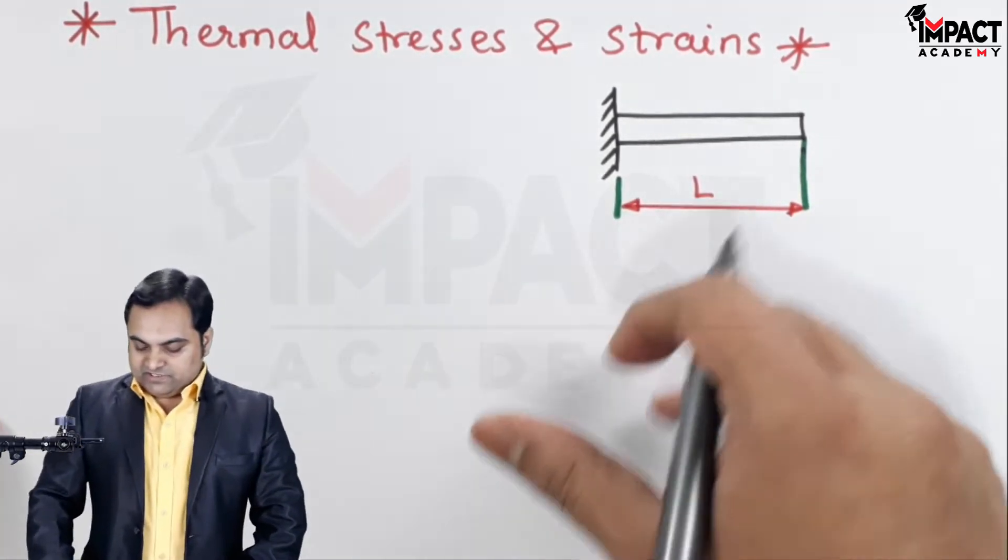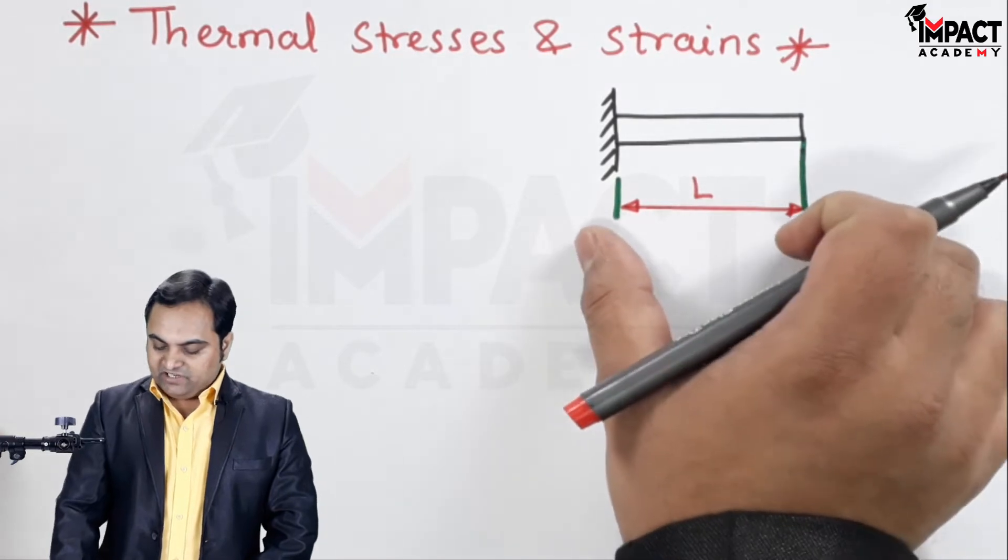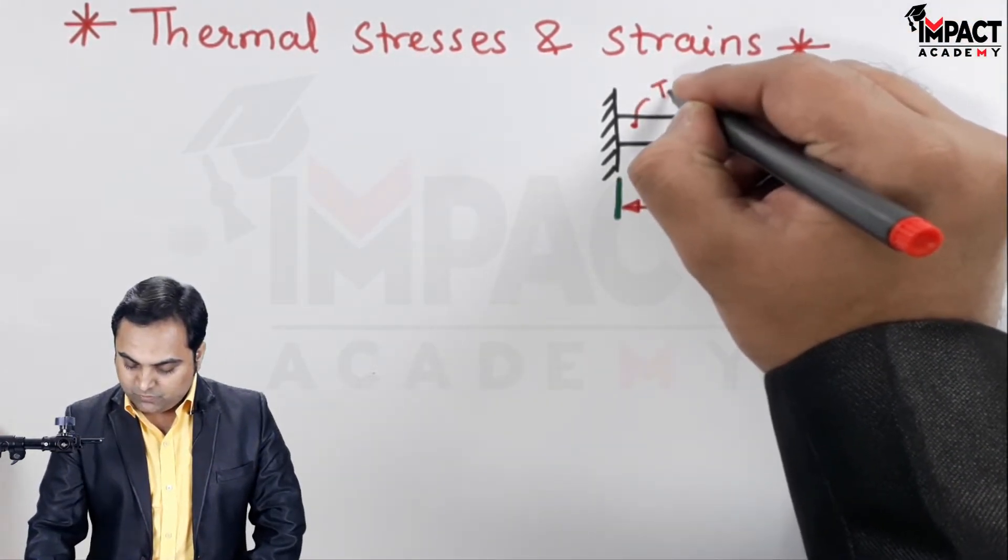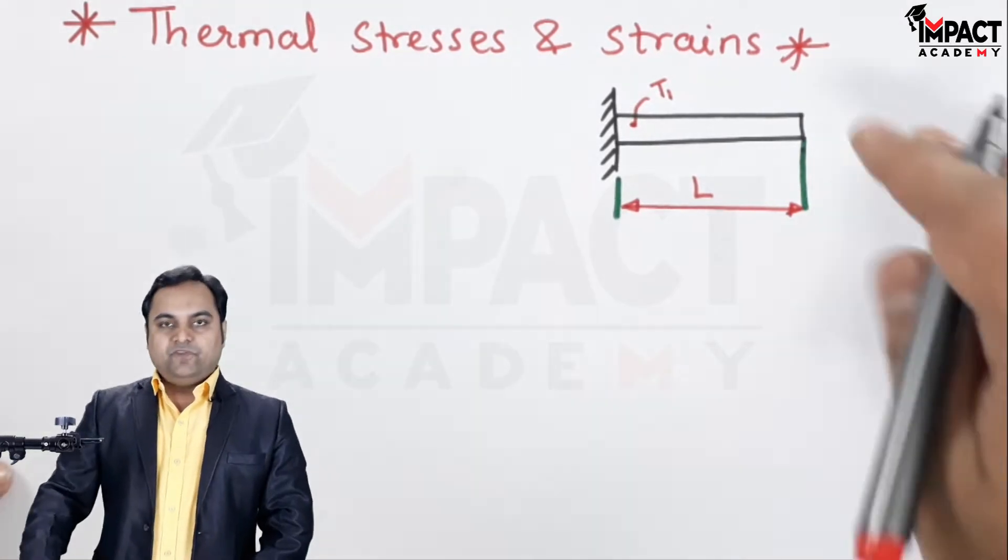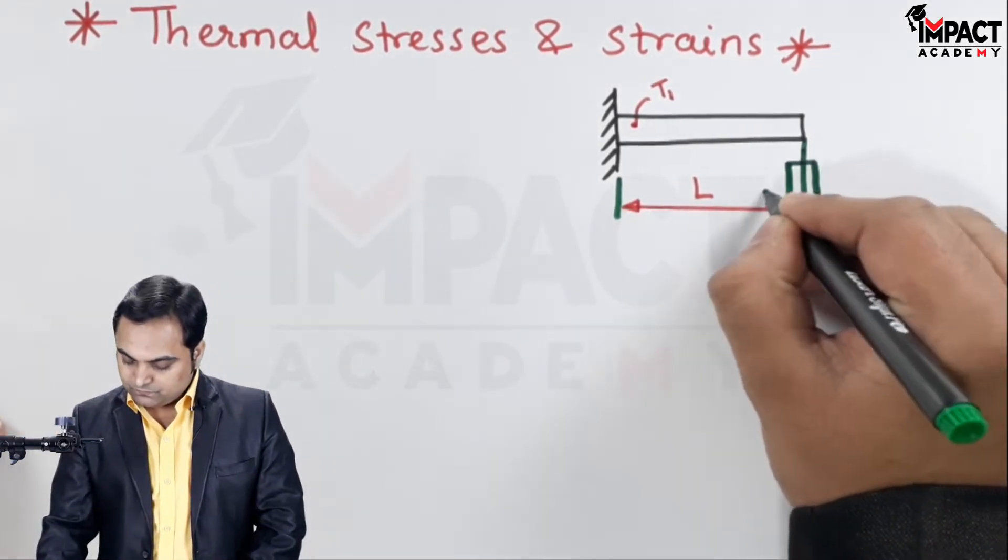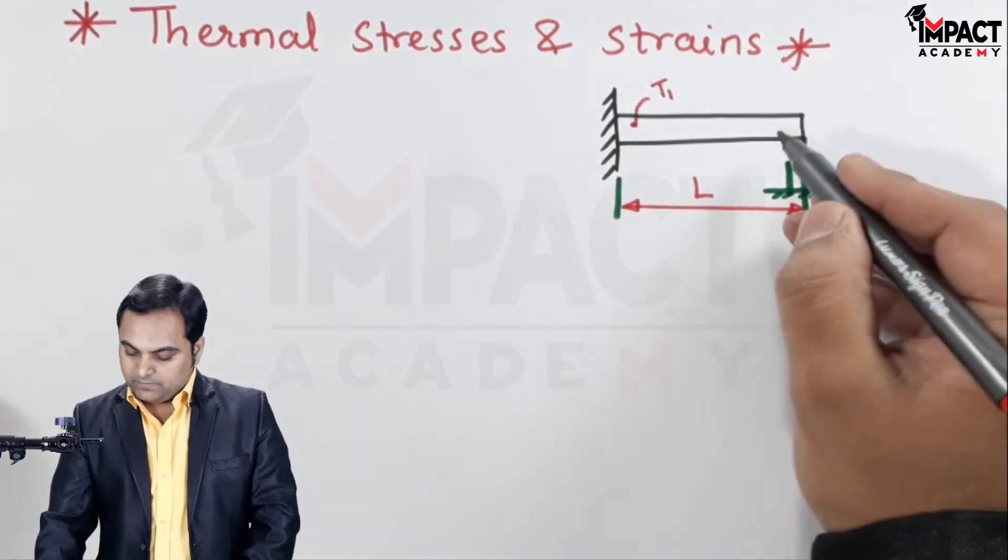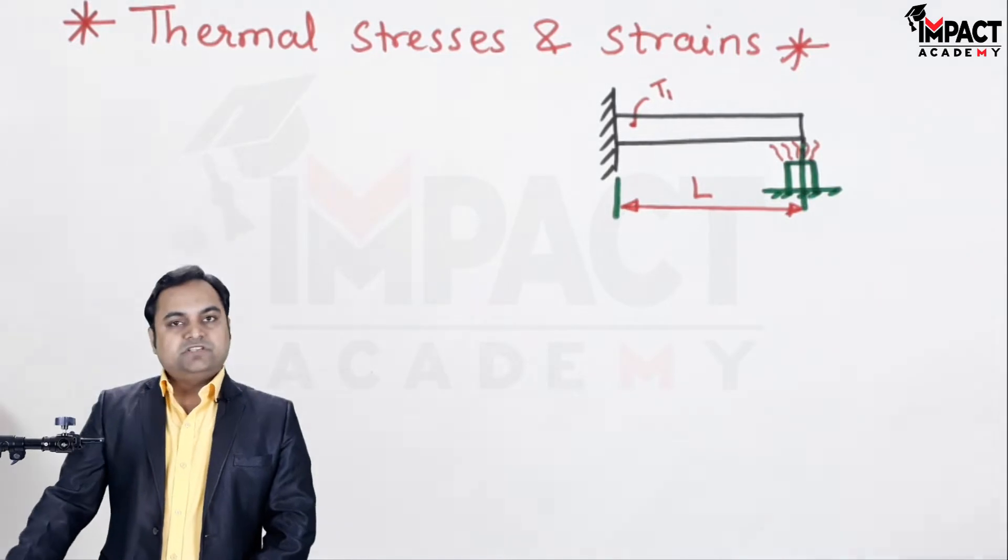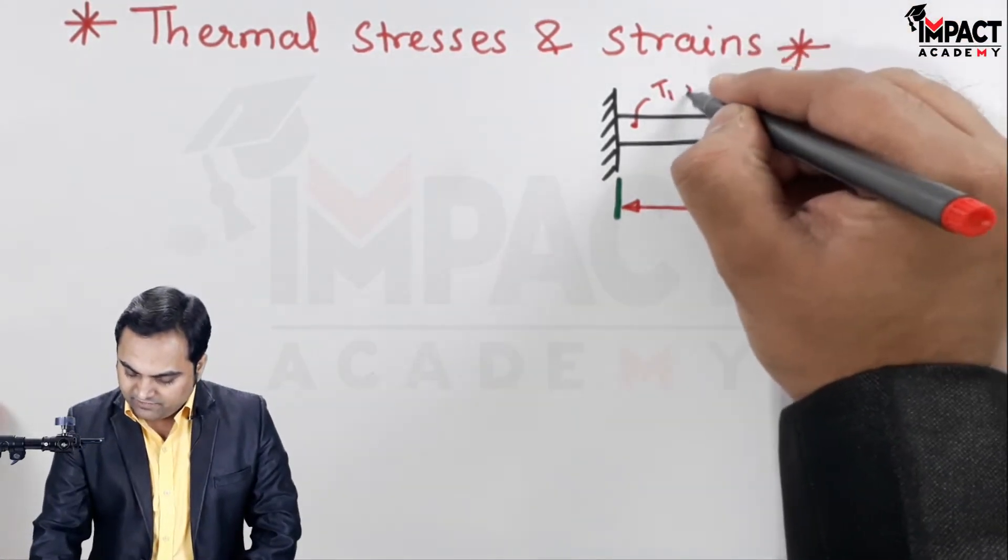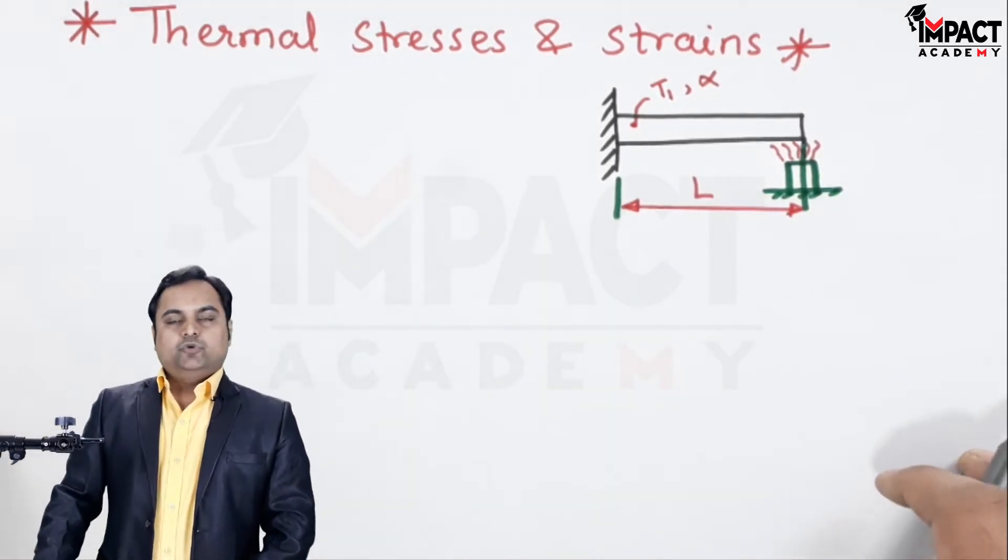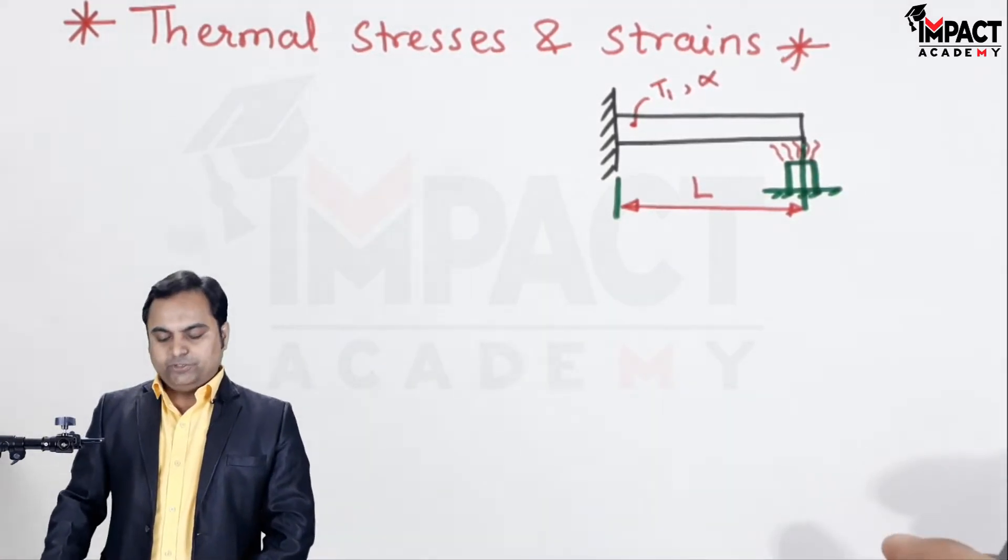Now suppose if there is a bar or a rod having length L. Initially the temperature is T1, and when this bar is heated by supplying external heat, this bar is having a coefficient of thermal expansion denoted by alpha. So when it has alpha value, it is going to expand when it gets heated, that is when the temperature rises.